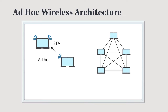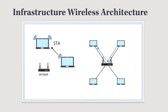Another version of point-to-point wireless connection is an ad-hoc wireless network, where the devices are just connecting directly to each other. As we can see on the right, we can have five devices that have all established a direct connection with another device.